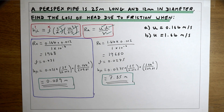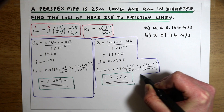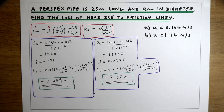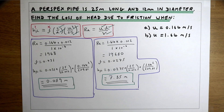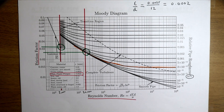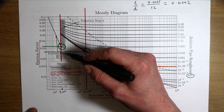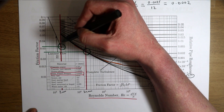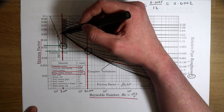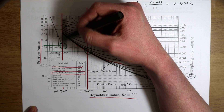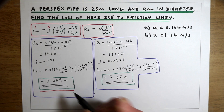We can now ask: what happens to the total loss if we change the pipe material? Going from a smooth perspex pipe to a coarse concrete pipe — for the first part where Reynolds number was 2,000, we've only got one line on the Moody diagram. So for laminar flow, the loss due to friction is independent of the roughness of the pipe. The friction factor stays at 0.031 and the answer remains 0.089 metres.